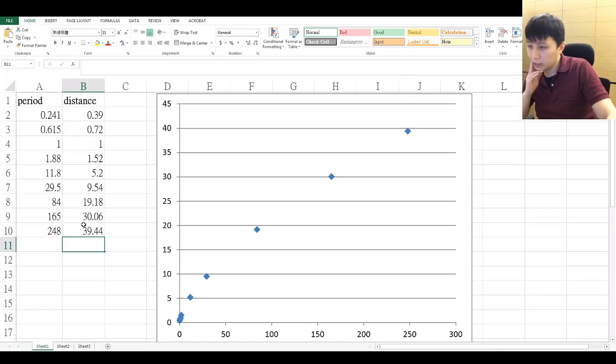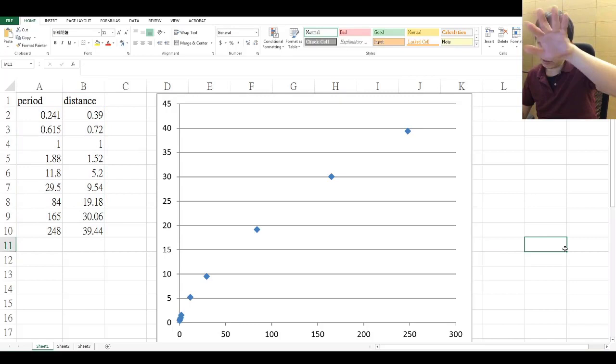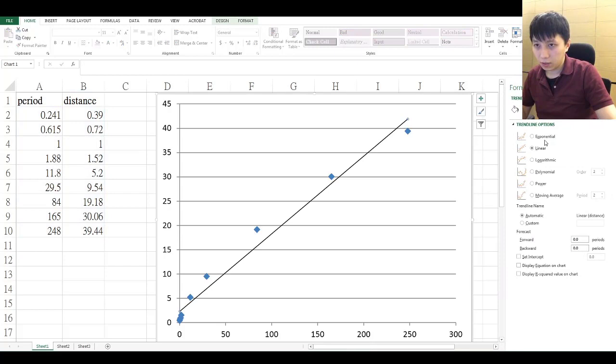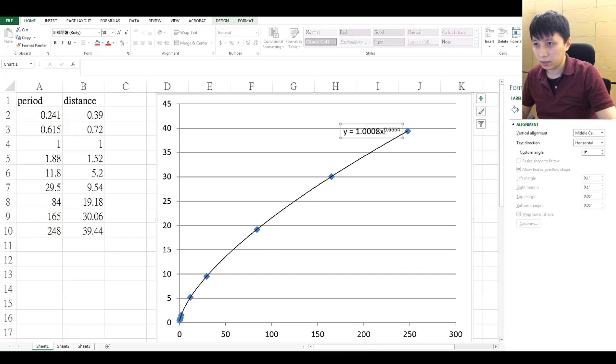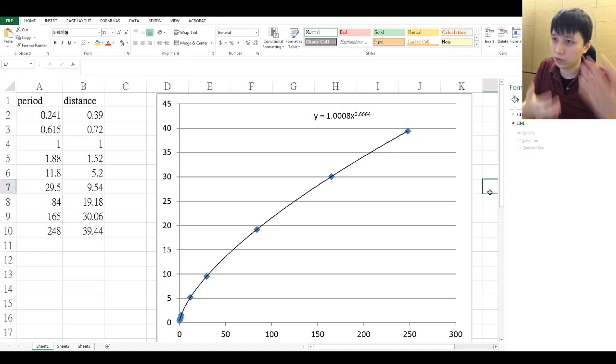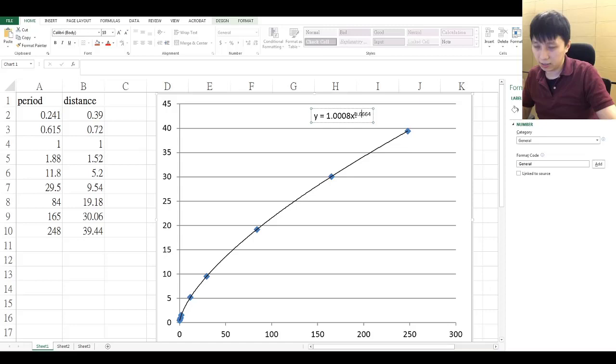Simply so, if you try to add the trend line, obviously these won't fit. If you try polynomial, won't fit. If you try power equation, that probably is the best. And if you try to display the equation, then this is the equation that you are going to get. So if you are familiar with what we learned earlier, then you can actually directly get this index, which is 0.66, very close to 2 over 3, and then you can deduce the relationship between the period and also the distance.